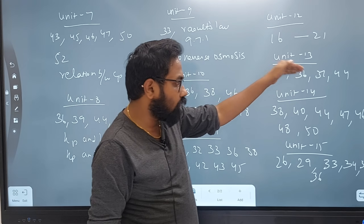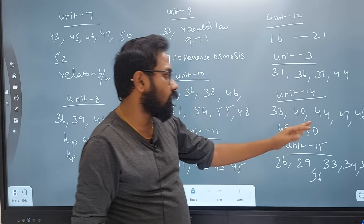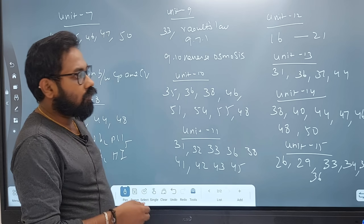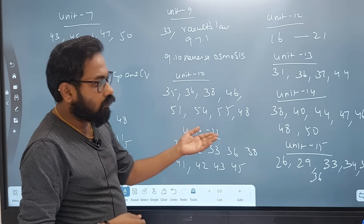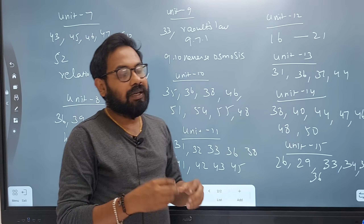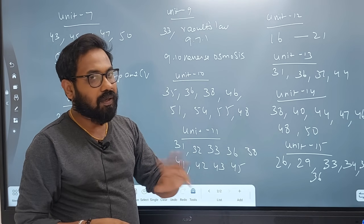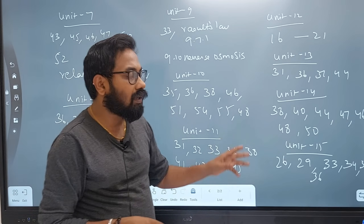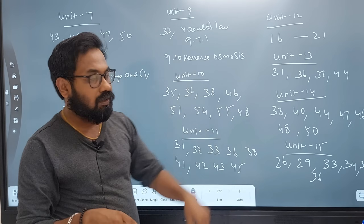Unit 14, pages 38, 40, 44, 47, 46, 58, 50. Unit 14 is the first lesson. The SN1 mechanism and SN2 mechanism are very important. E1 elimination and E2 elimination are also key topics.